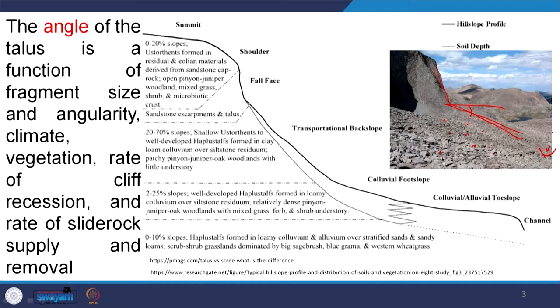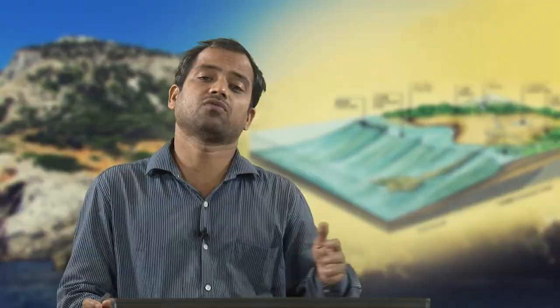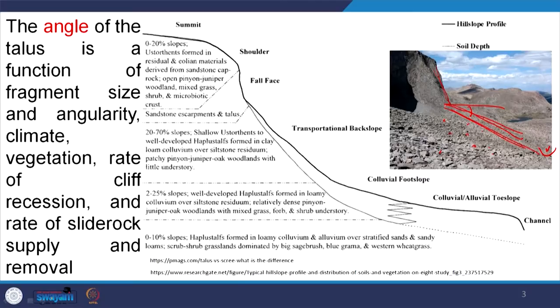All those parameters define what the angle should be. When discussing mass wasting, fine sand has a different angle of repose, conglomerate has a different angle of repose, coarse sand has another, and if material is wet it differs from dry. Depending on material characteristics — fine or coarse, water-saturated or unsaturated — and the rate of supply and removal, all those parameters define the angle of talus.